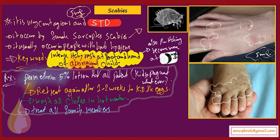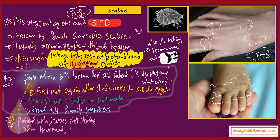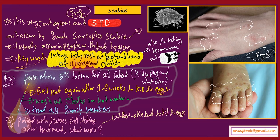A very important exam question: a patient with scabies still has itching after treatment — what is the next step? The first thing to do is retreat the patient in order to kill the eggs. The patient should receive two courses of permethrin lotion: one at presentation and another after one to two weeks.